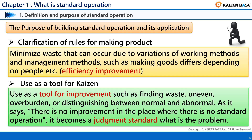The second purpose is to use Standard Operation as a tool for Kaizen. It can be used as a tool for improvement, such as finding waste, unevenness, or overburden, and distinguishing between normal and abnormal. As it says, there is no improvement in the place where there is no Standard Operation — it becomes a judgment standard.